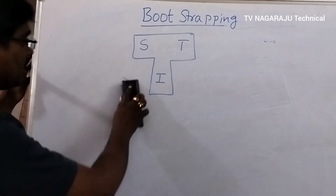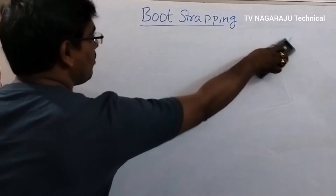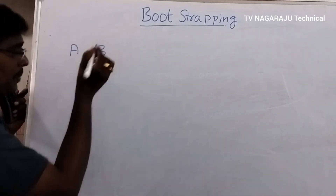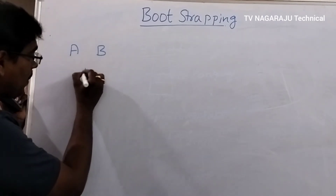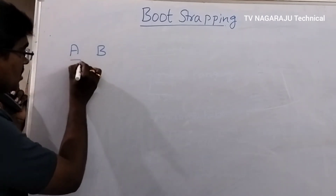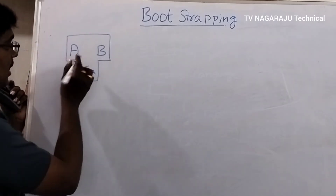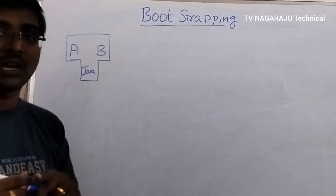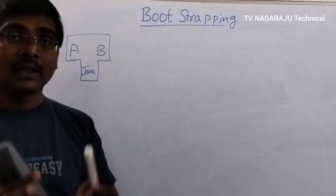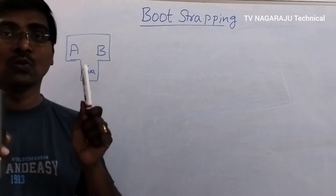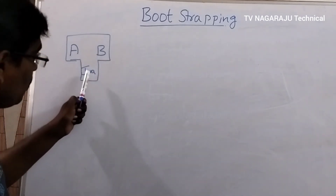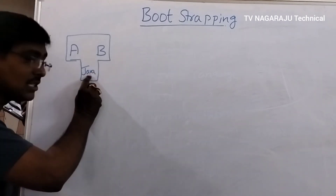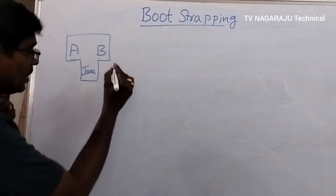Consider an example: A and B are two languages, where A is the source language and B is the target language, and the compiler is implemented using Java. But is this possible? No — because the CPU, that is the machine, understands only machine language, but here the implementation is in Java. So you have to convert this Java into machine language.